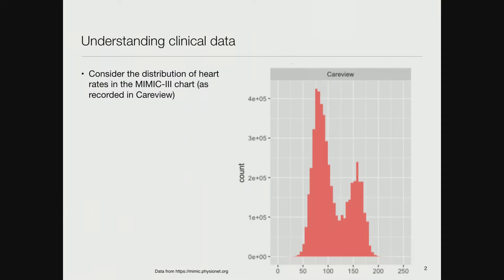This is the old data from CareView. You look at that and say heart rates range from 40 to 200, which is OK. But there's this funny thing - there are two peaks. Where do you see two peaks in physiological data? Not typical.